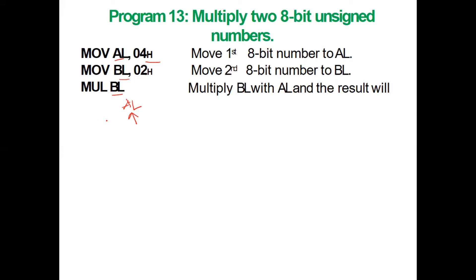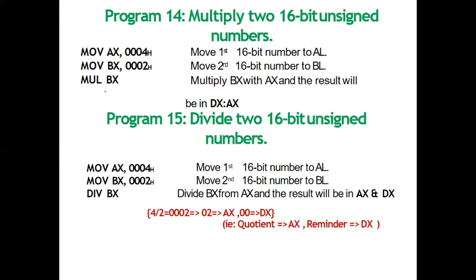In the case of 8-bit multiplication, the result can be a 16-bit number. The lower byte is stored in the AL register and the higher byte is stored in the AH register. For multiplication, the first word will be stored in the AX register, and if we have an upper word, it will be stored in the DX register.